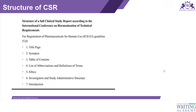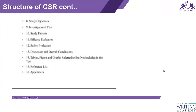The introduction, which can be copied from the clinical study protocol, is followed by the study objectives — both primary and secondary — as specified in the protocol. Then the investigational plan describes the study design, randomization technique, and all related procedures. The study patient section includes the inclusion and exclusion criteria and the actual number of participants enrolled. After that, the efficacy and safety evaluation section explains how data was obtained and analyzed.